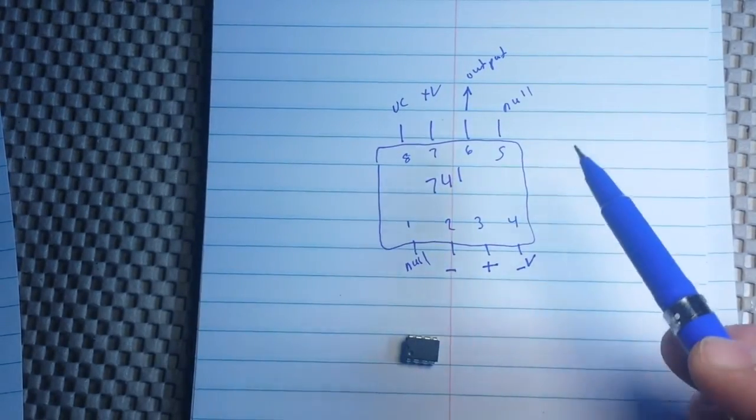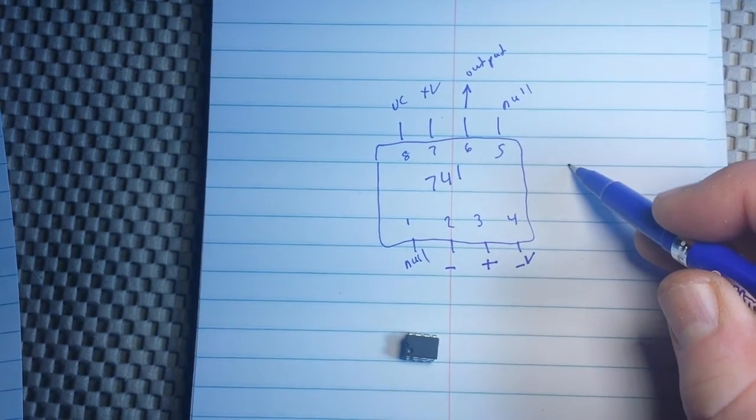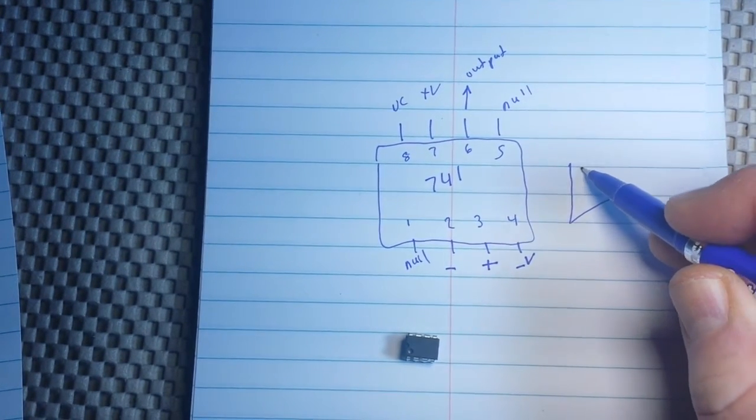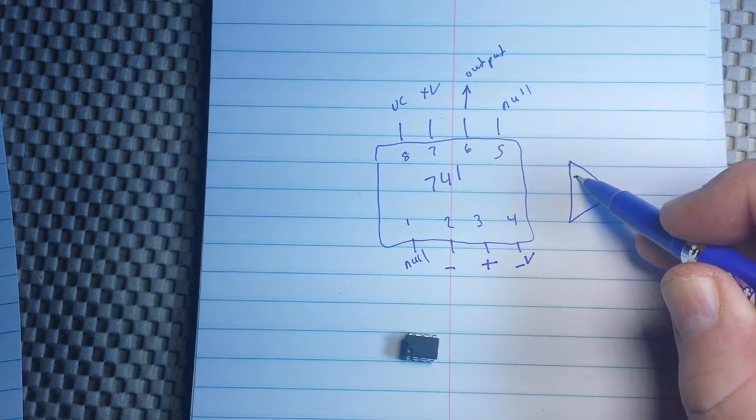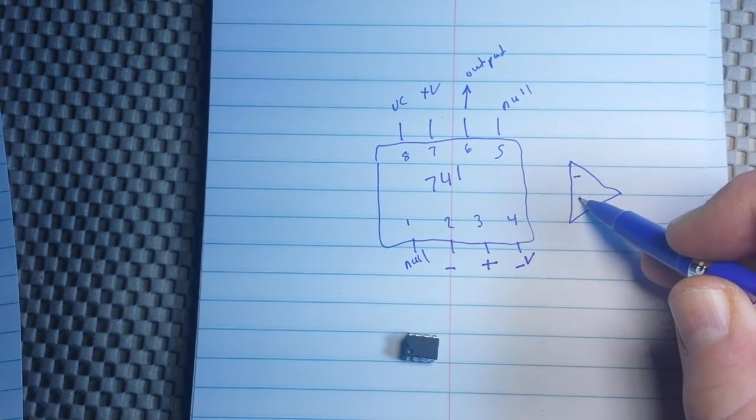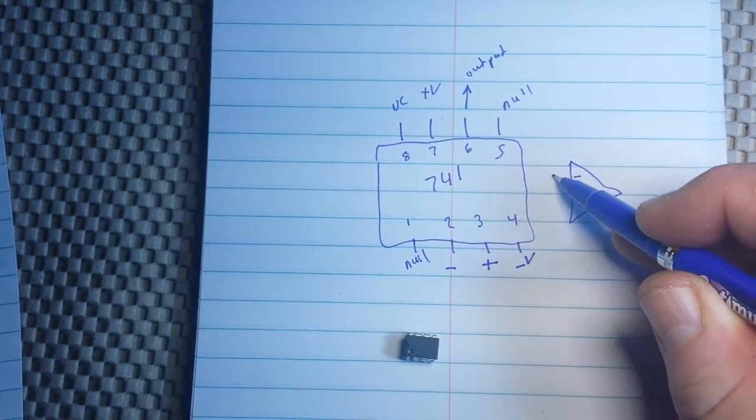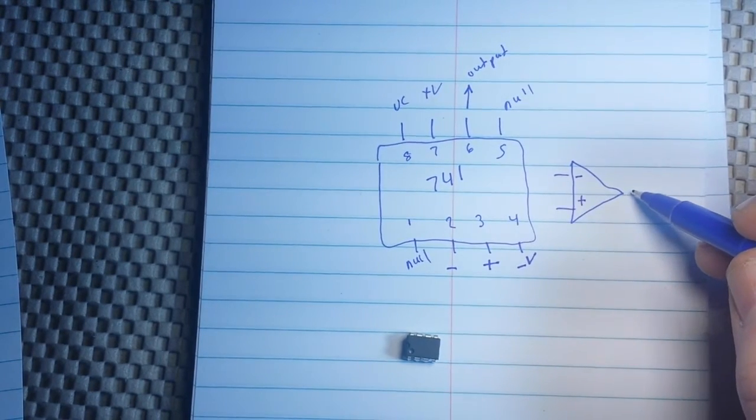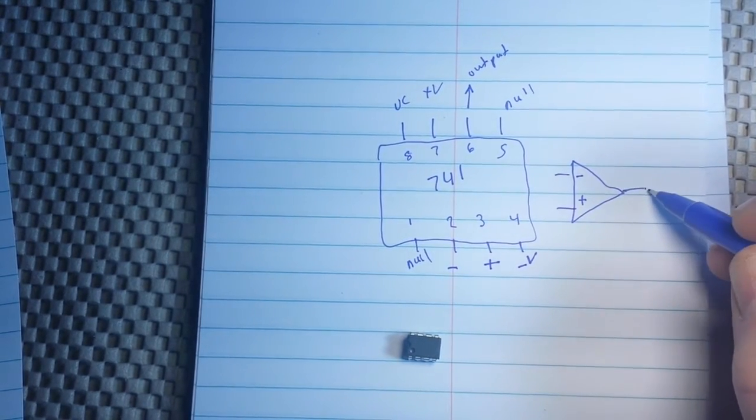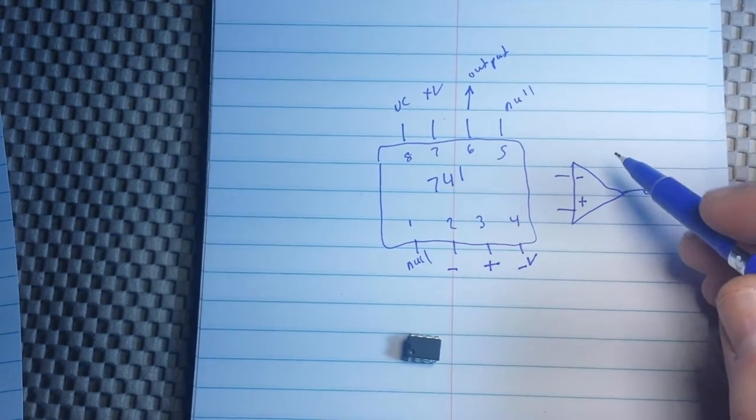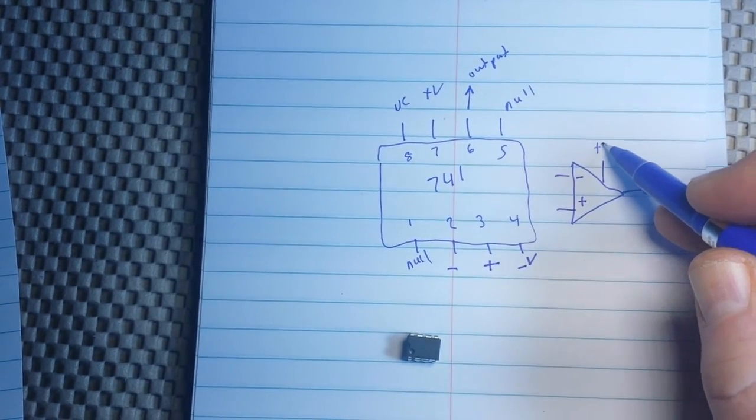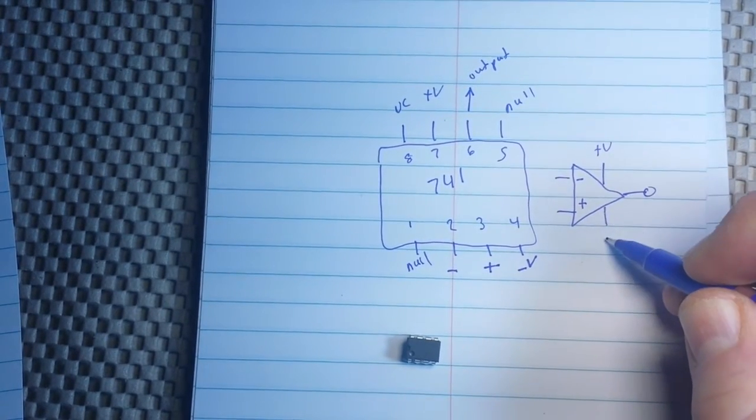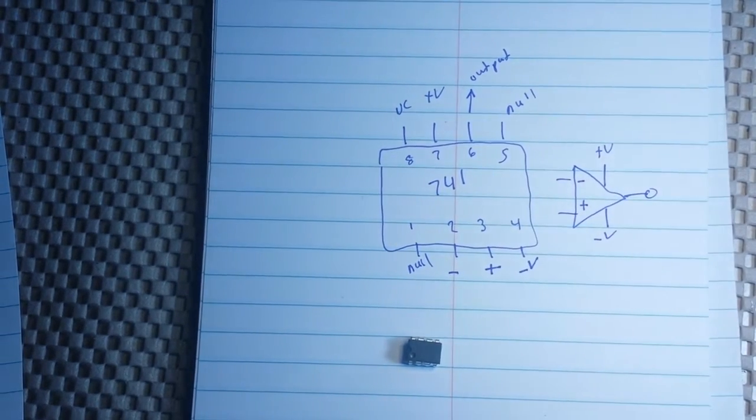So, the standard symbol for the op amp is, of course, the triangle with the inverting, non-inverting inputs. And there's our output. Plus V. Minus V.